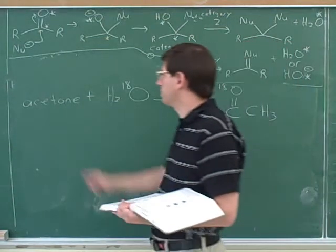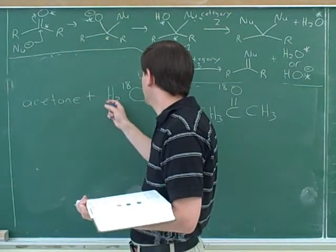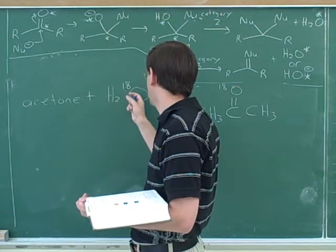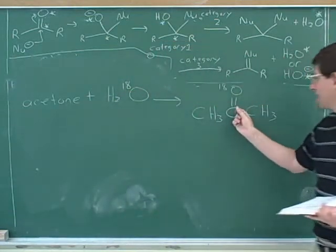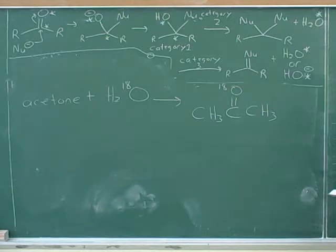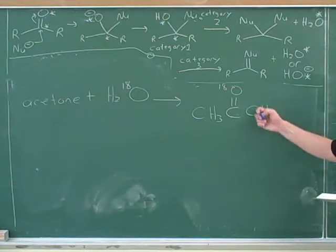So this question is telling us that when we treat acetone with this form of water, with the oxygen 18, we get this product. And they're asking us to explain how this product is being formed.